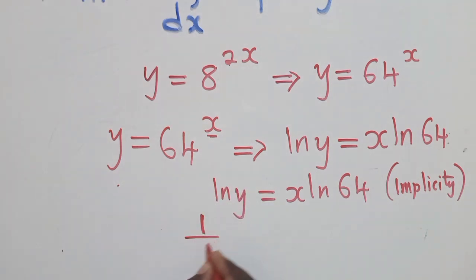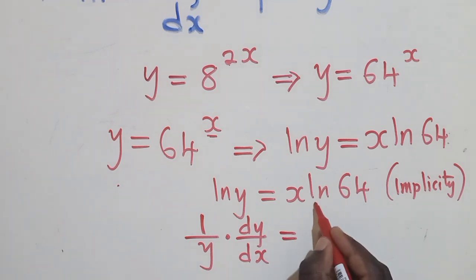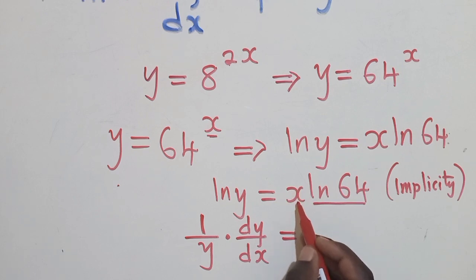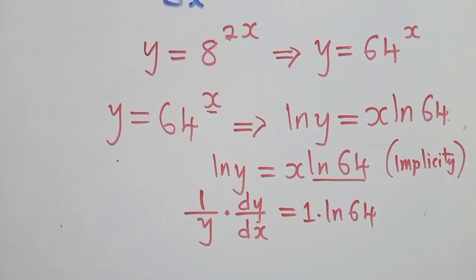It will just be equal to 1 over y. Remember to multiply it by dy/dx, like that. Which is equal to, here we shall treat this as a constant and we differentiate this. So what is the derivative of x? It's a 1. This 1 multiplied by what? ln 64.